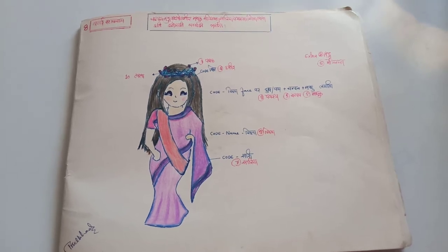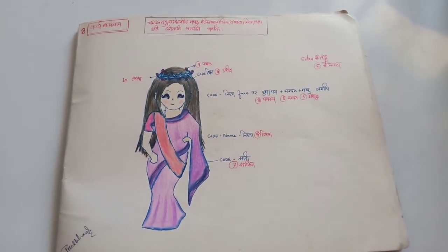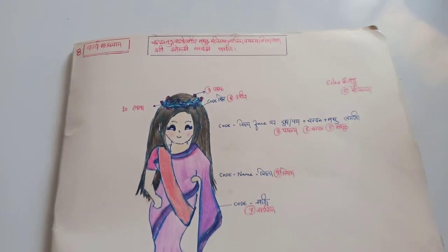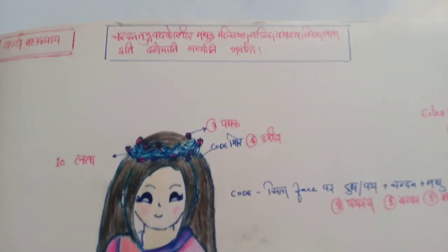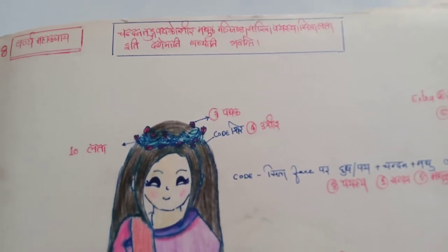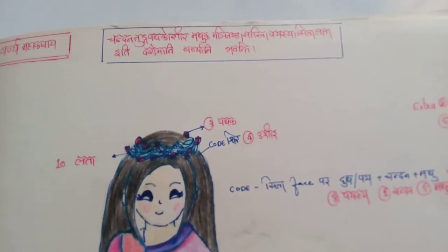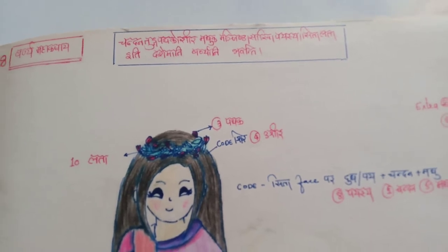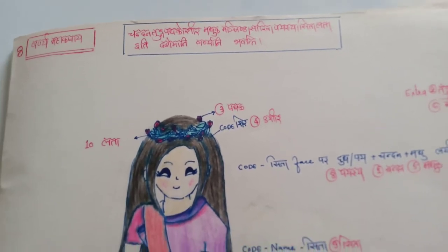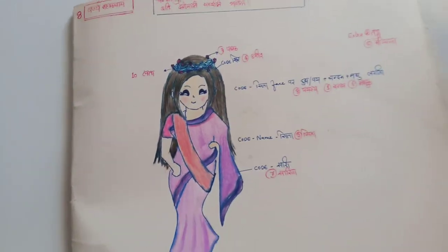Hello everyone, today we will learn about the Varnia Mahakashaya. The shlok for the Varnia Mahakashaya is: Chandana, Tung, Padmak, Ushira, Maduka, Manjishita, Sariva, Payasya, Sita, Lata — iti dashamani Varniiani bhavanti. Varnia's code is Miss World, Miss Universe.